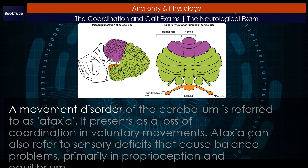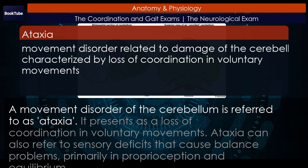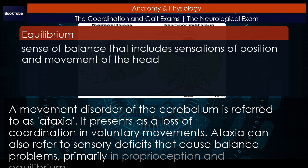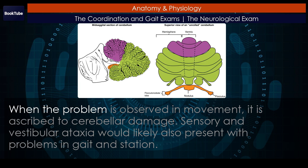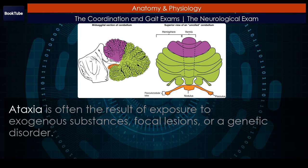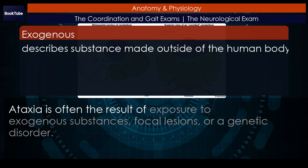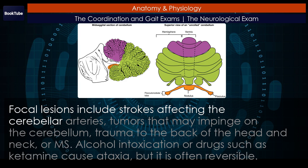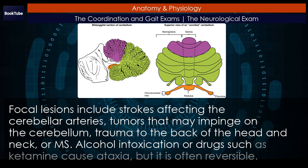A movement disorder of the cerebellum is referred to as ataxia. It presents as a loss of coordination in voluntary movements. Ataxia can also refer to sensory deficits that cause balance problems, primarily in proprioception and equilibrium. When the problem is observed in movement, it is ascribed to cerebellar damage. Sensory and vestibular ataxia would likely also present with problems in gait and station. Ataxia is often the result of exposure to exogenous substances, focal lesions, or a genetic disorder. Focal lesions include strokes affecting the cerebellar arteries, tumors that may impinge on the cerebellum, trauma to the back of the head and neck, or MS. Alcohol intoxication or drugs such as ketamine cause ataxia, but it is often reversible.